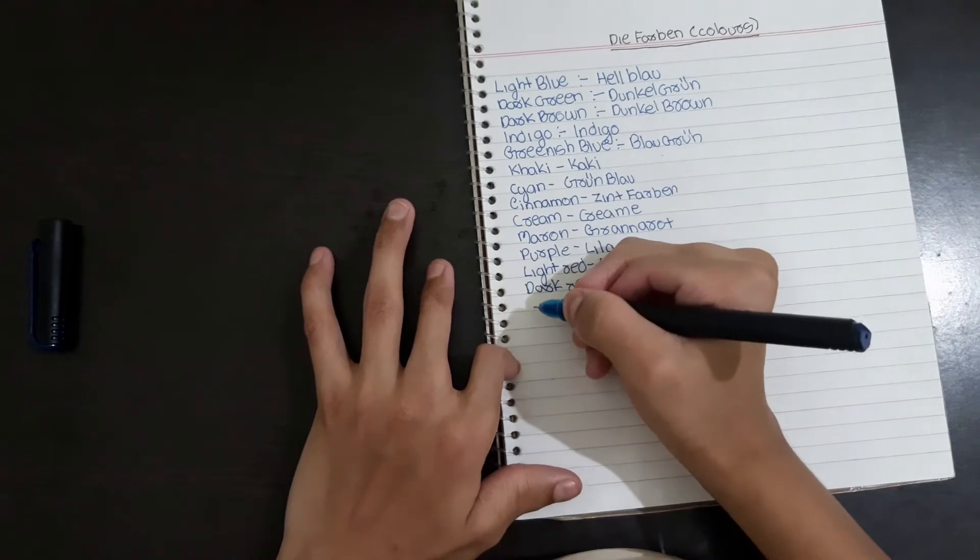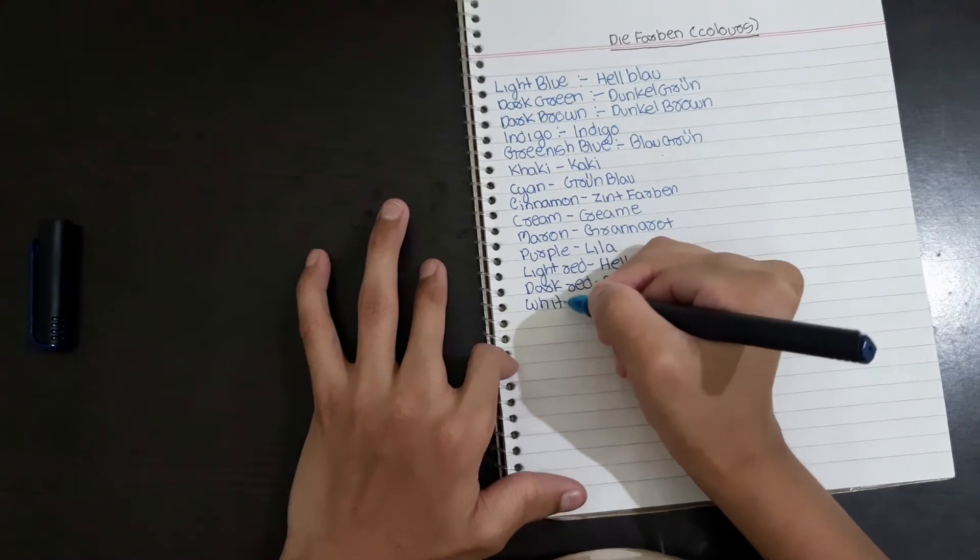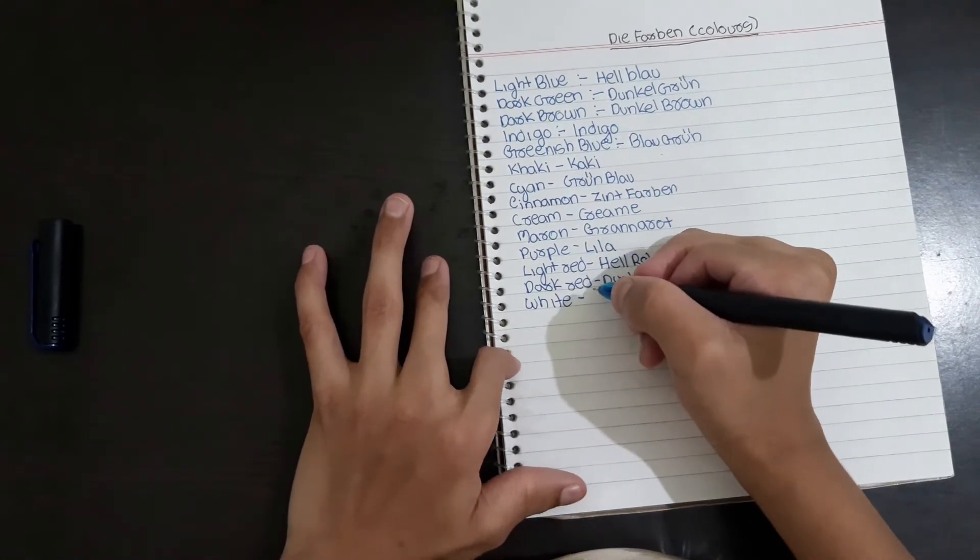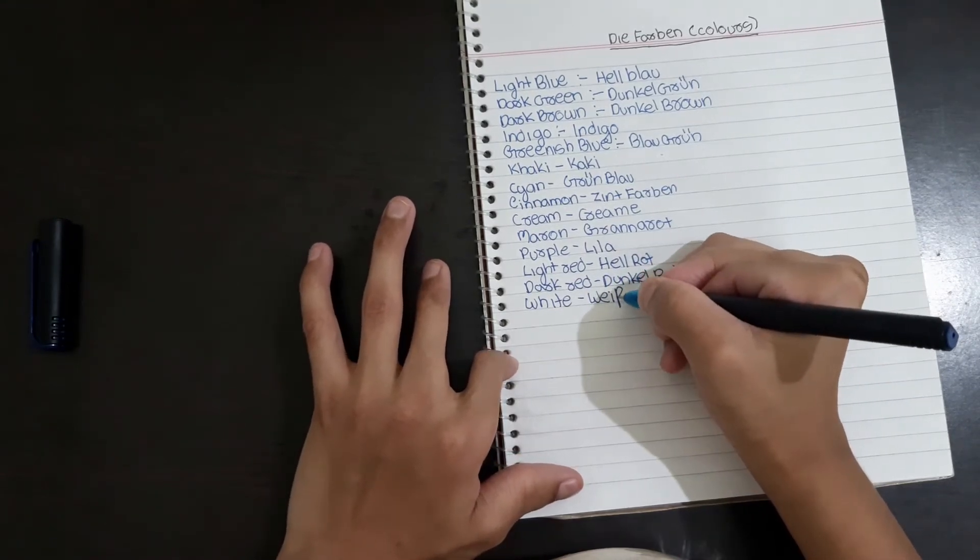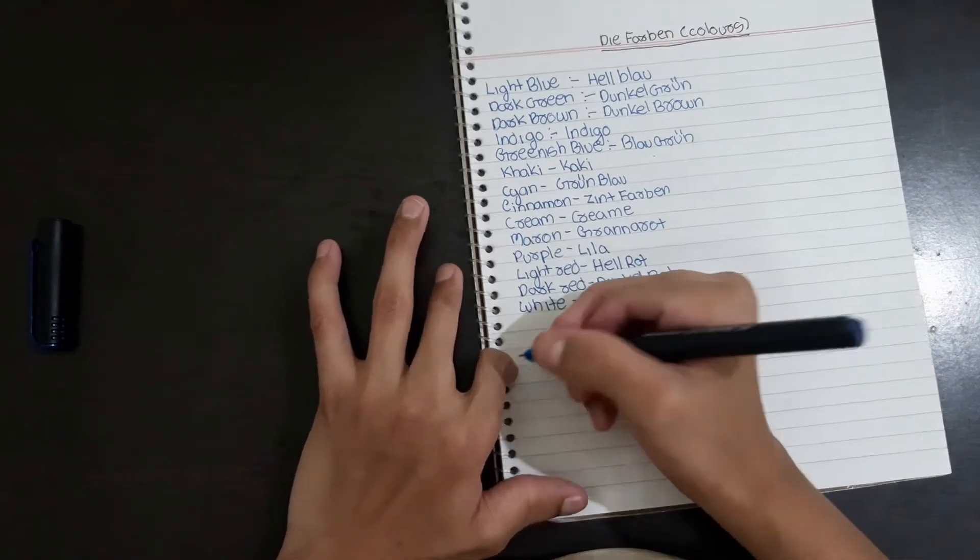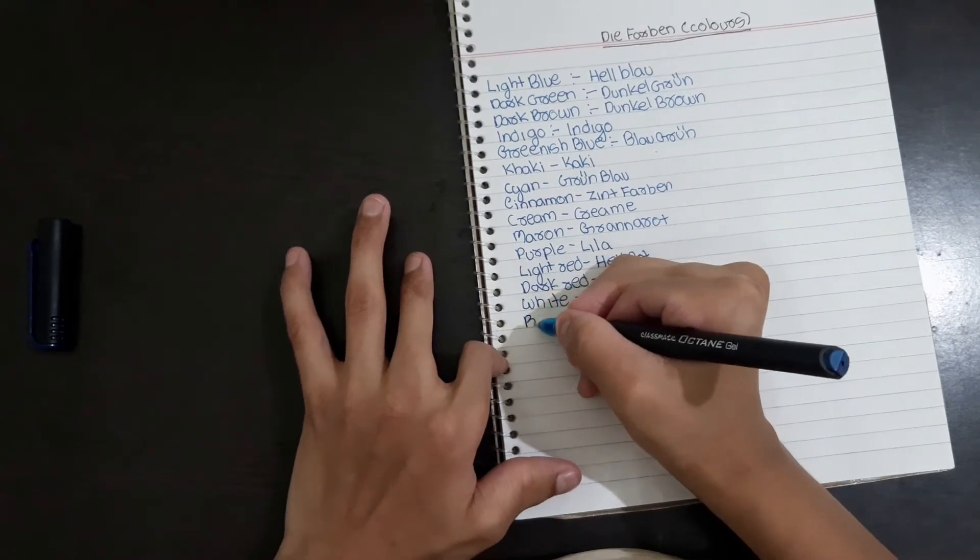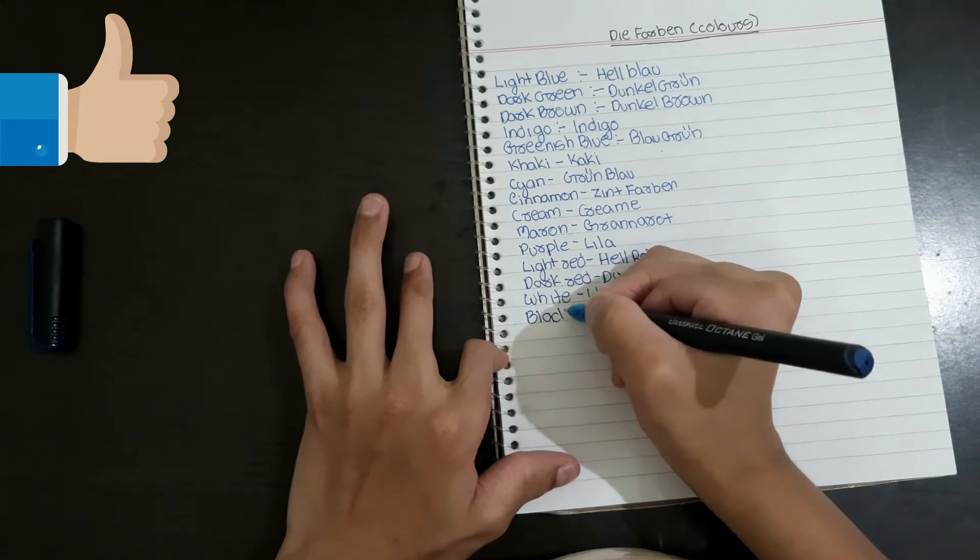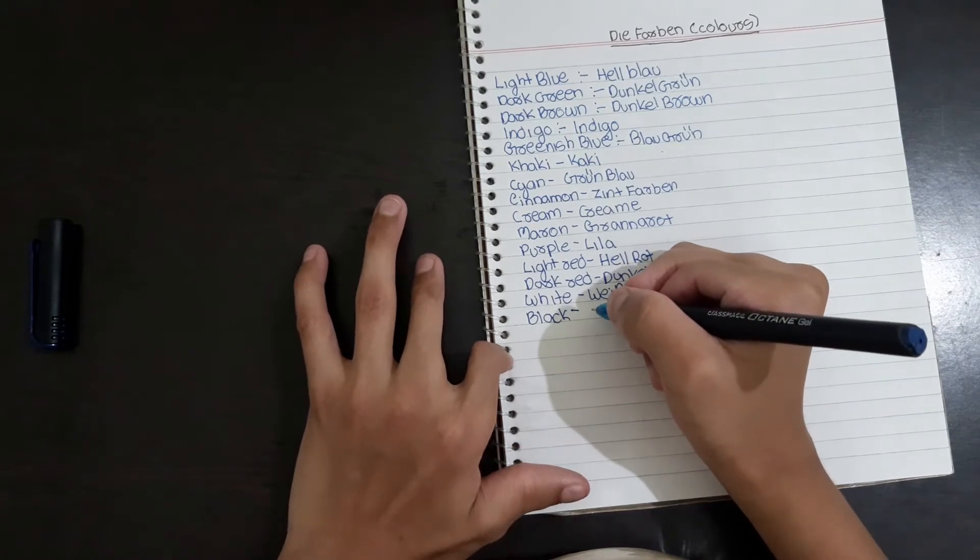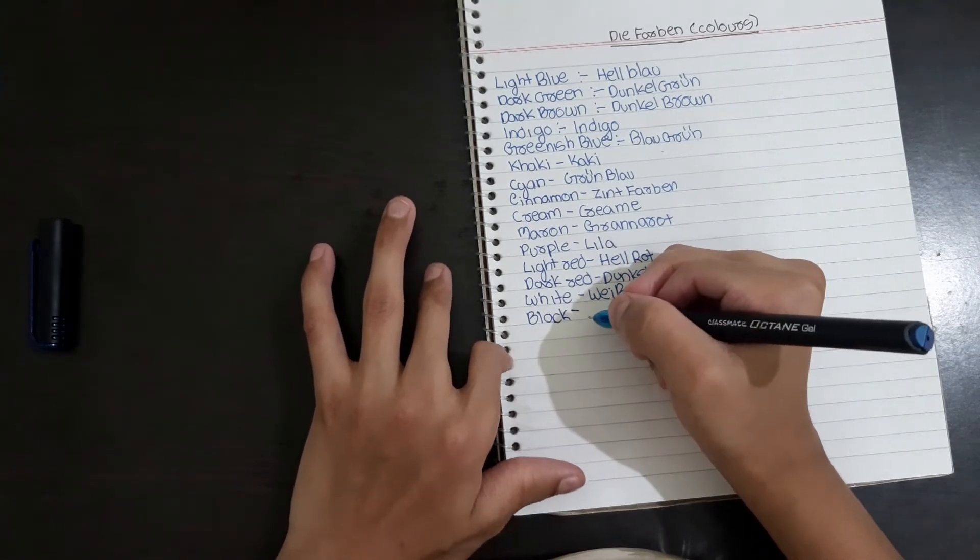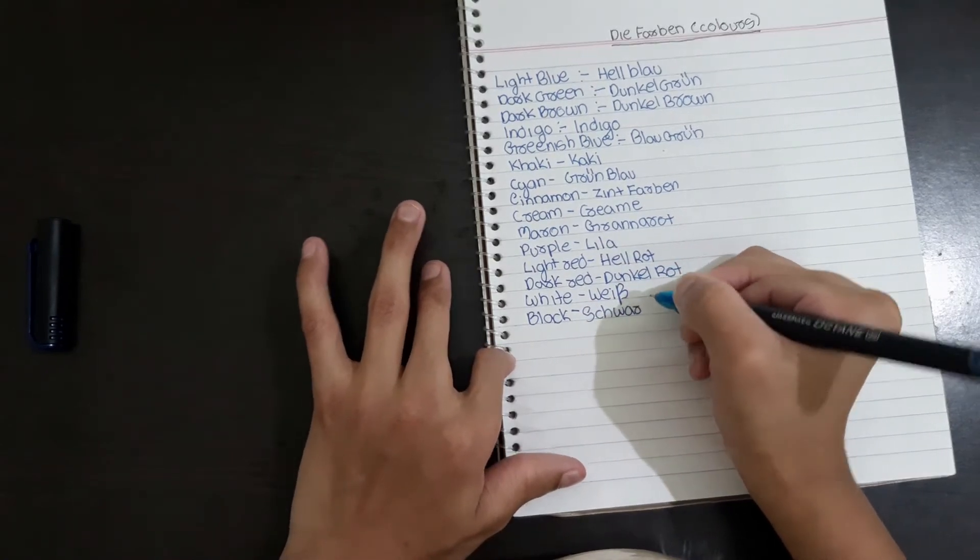White means Weiß. We have to write it like this: W-E-I-ß. Black is Schwarz, S-C-H-W-A-R-Z.